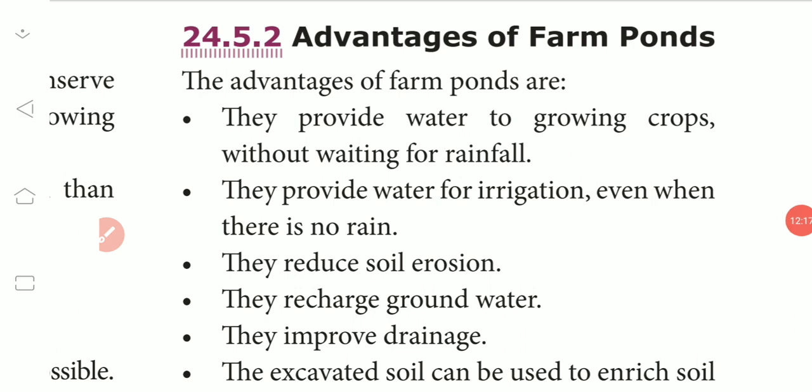Advantages of farm ponds: They provide water to growing crops without waiting for rainfall. They provide water for irrigation even when there is no rain — the farm pond will have already collected water. They also reduce soil erosion.